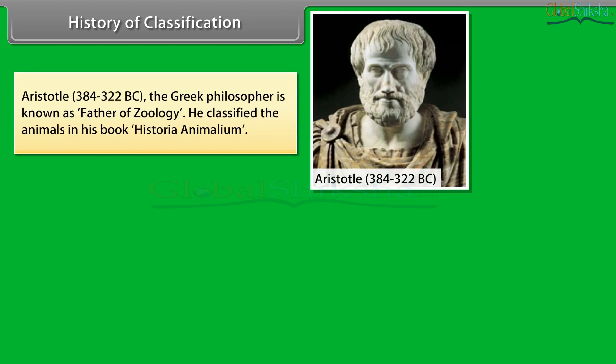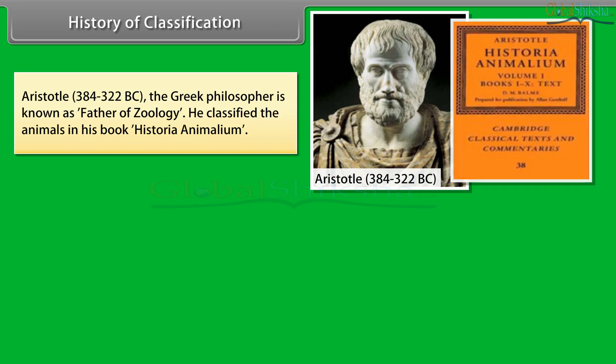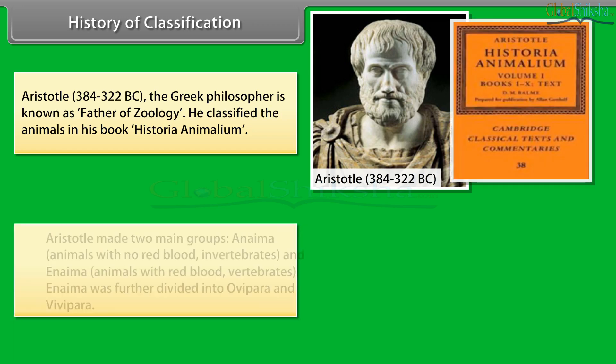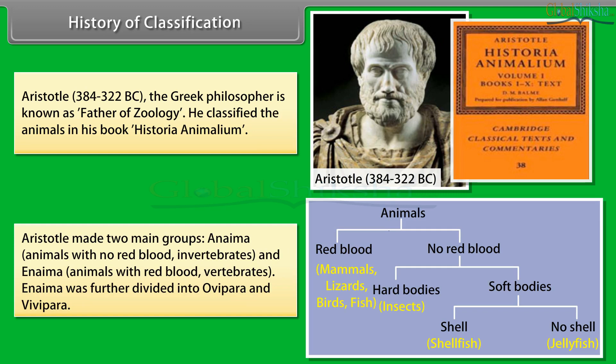Aristotle, 384 to 322 B.C., the Greek philosopher known as father of zoology, classified animals in his book Historia Animalium. He made two main groups: Anima, animals with no red blood (invertebrates), and Anima, animals with red blood (vertebrates). Anima was further divided into ovipara and vivipara.